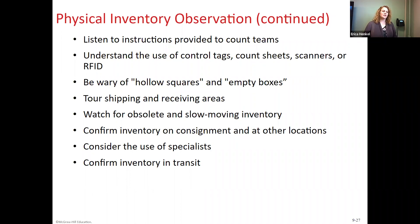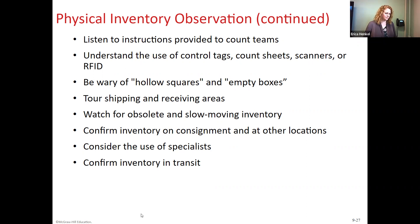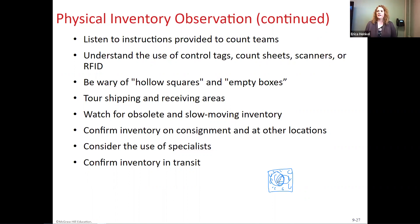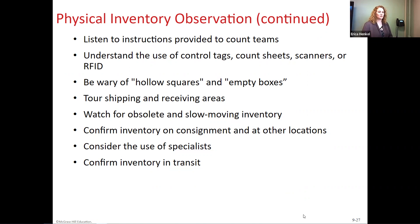Things to watch for include hollow squares and empty boxes. For example, a pallet might look like a solid stack of boxes 10 high, but in the middle there's a big hollow space with nothing in it — only the outer boxes are filled. The Crazy Eddie case had some hollow squares and empty box type things going on as well. It's kind of an interesting case from that standpoint.